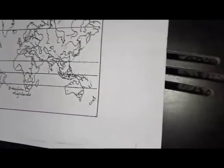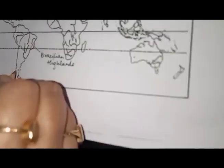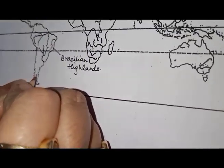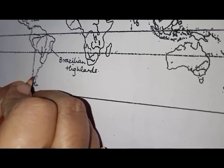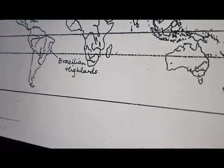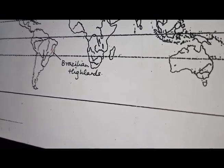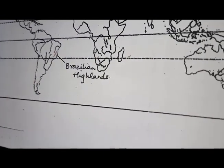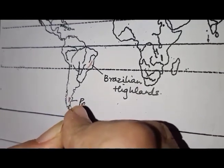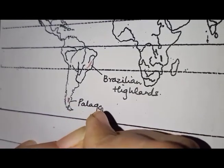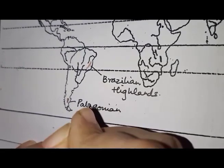Next is the Patagonian Plateau. It is in South America right over here in the southernmost part. You'll draw a small triangle like this. Draw a small triangle and label it as Patagonian Plateau.